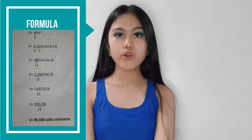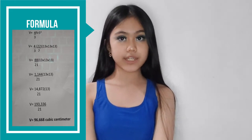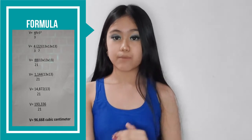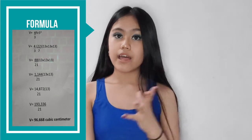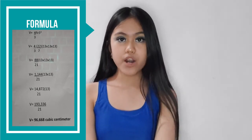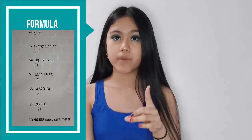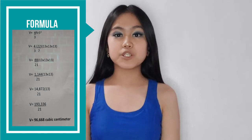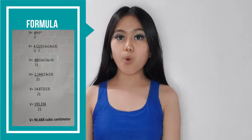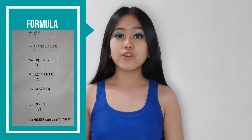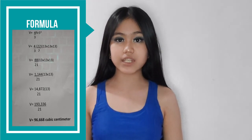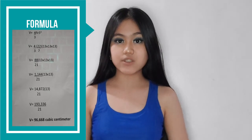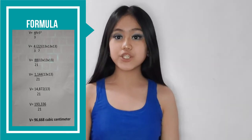V equals 4 over 3 times 22 over 7 times 13 times 13 times 13. Then V equals 88 over 21 times 13 times 13, and then V equals 1,144 over 21. We bring down the 21 from 88 over 21 to 13 times 13, and then V equals 14,872 over 21 times 13, and then V equals 193,336 divided by 21 equals 9,206.47 cubic centimeters, which is the volume of the sphere.